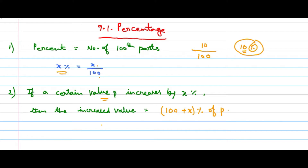Previously it is simply 100% of P. Now it is increased to x percent of P. Adding these two gives (100 + x)% of P. Similarly, if a certain value P decreases by x percent, then the decreased value will be (100 − x)% of P.